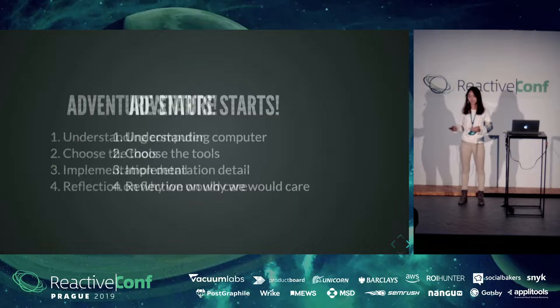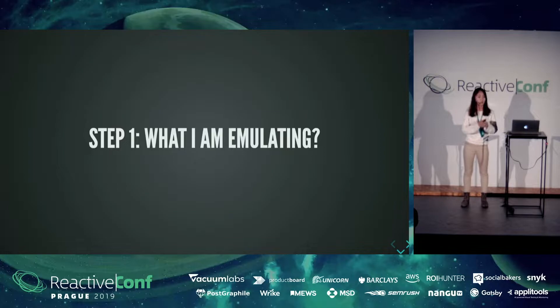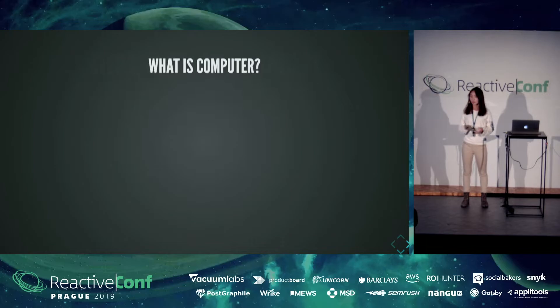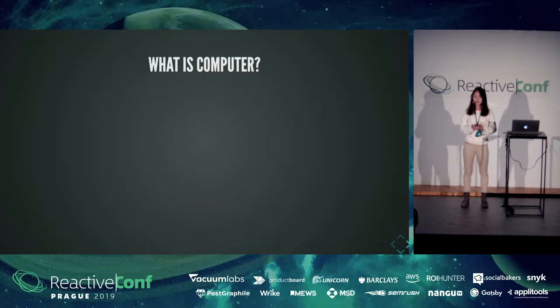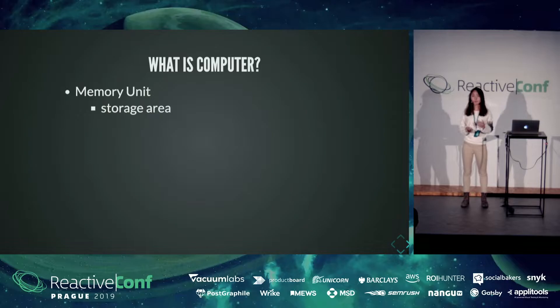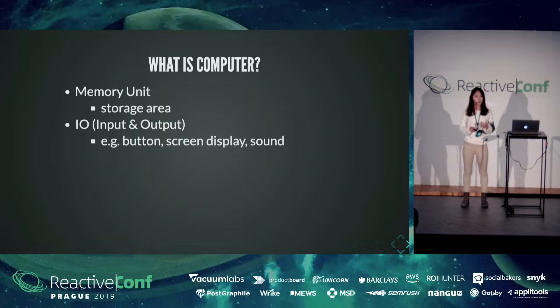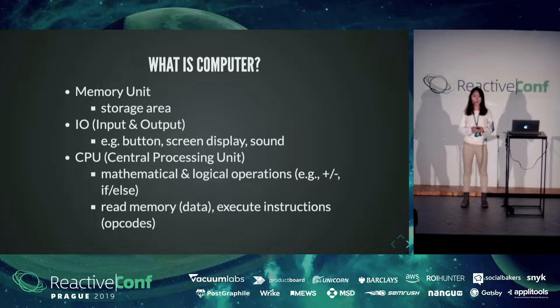So, first thing first. My goal is to build an emulator for Game Boy - an emulator for a small, simple computer. So, what is a computer? When I say computer here, I'm referring to those very simple computers based on an 8-bit unit process. Every simple computer is at least composed of three things. First, memory unit, which is a storage area holding some values we will be using later in the process. I/O represents input and output - some examples for input can be a button, output can be a screen display or sound. And most importantly, CPU, central processing unit. This is the core, the brain of a computer.